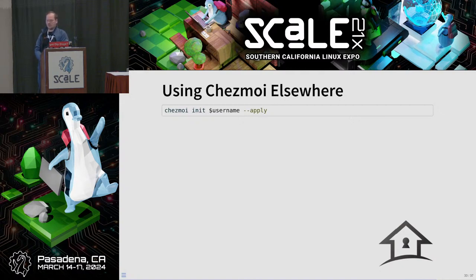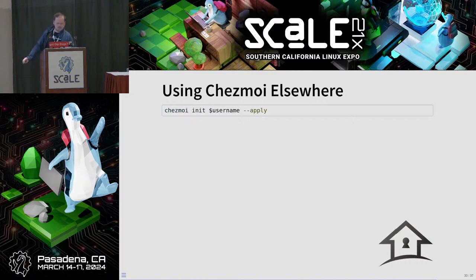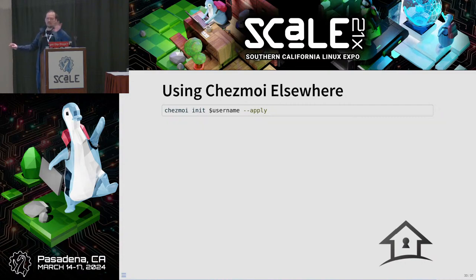Once you get a flow going with Chezmoi, it's pretty easy to use elsewhere using that same init command. Getting updates is as simple as running `chezmoi update` rather than init. That's a whirlwind tour of Ansible for system-level config and then a lighter-weight approach with Chezmoi for managing personal config files.